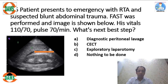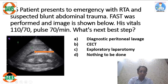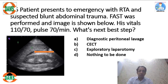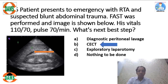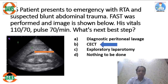This is a patient with road traffic accident who has undergone FAST. BP, pulse, and vitals are stable. On FAST, you can see the liver, kidney, and fluid in Morrison's pouch. In trauma, this fluid is considered blood — hemoperitoneum. However, the patient is hemodynamically stable, so we evaluate further with CECT. If the patient were unstable, the answer would be laparotomy, but since vitals are stable and FAST is positive, the answer is CECT.